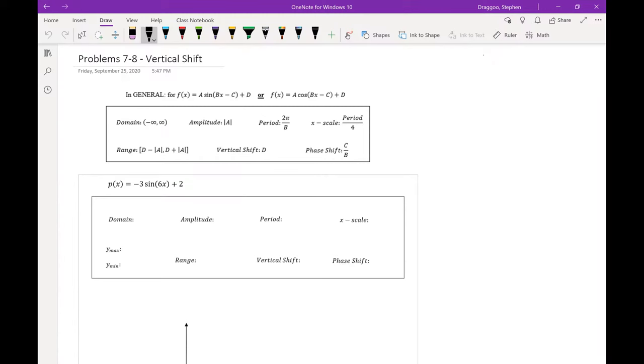With the addition of the vertical shift, not much changed from when we looked at just the amplitude and the period. The domain will still be all real numbers. The amplitude is still the absolute value of a. The absolute value of negative 3 is 3 in this case. The period has not changed. I still want 2π over b. So 2π over 6, which is π over 3.